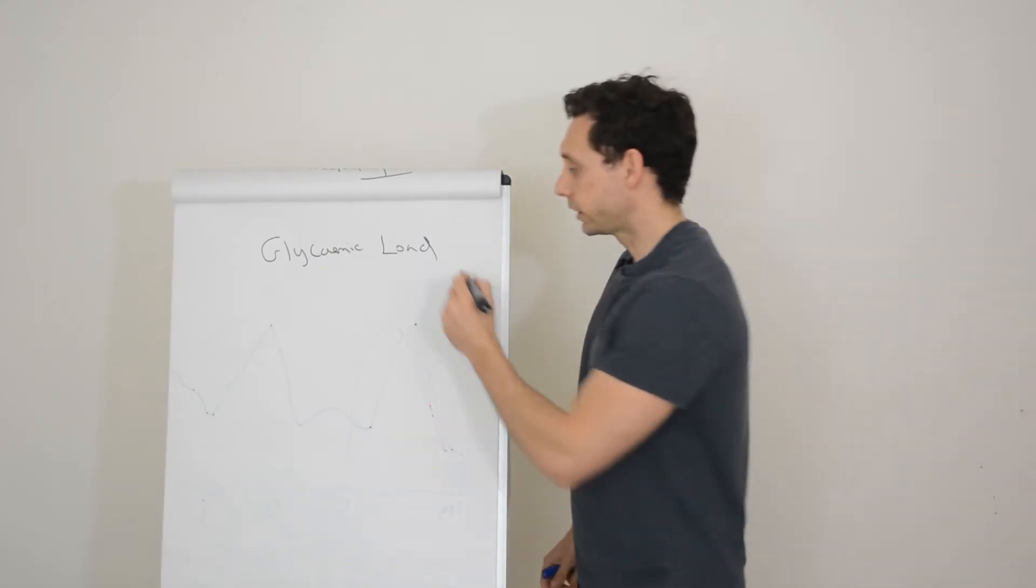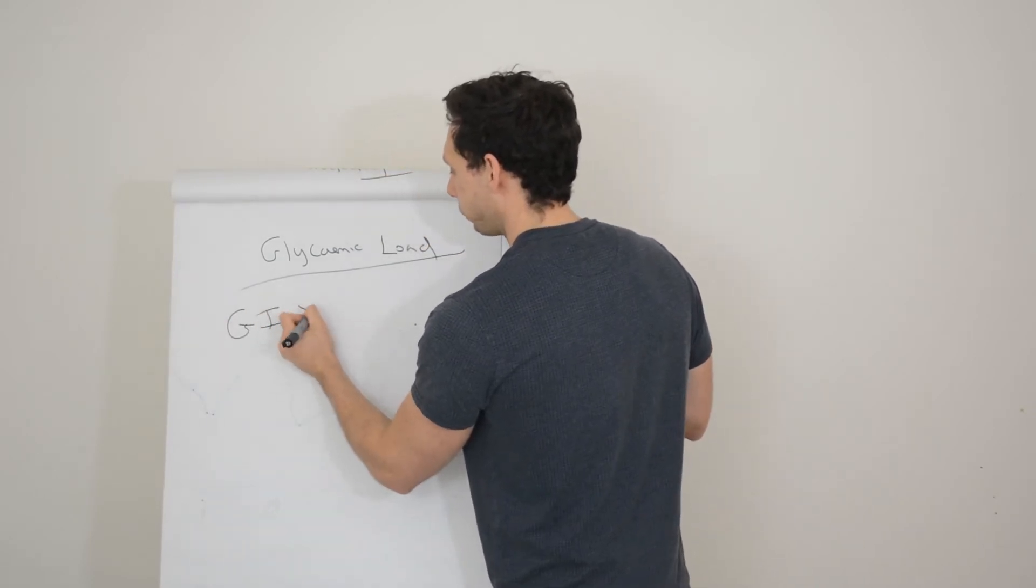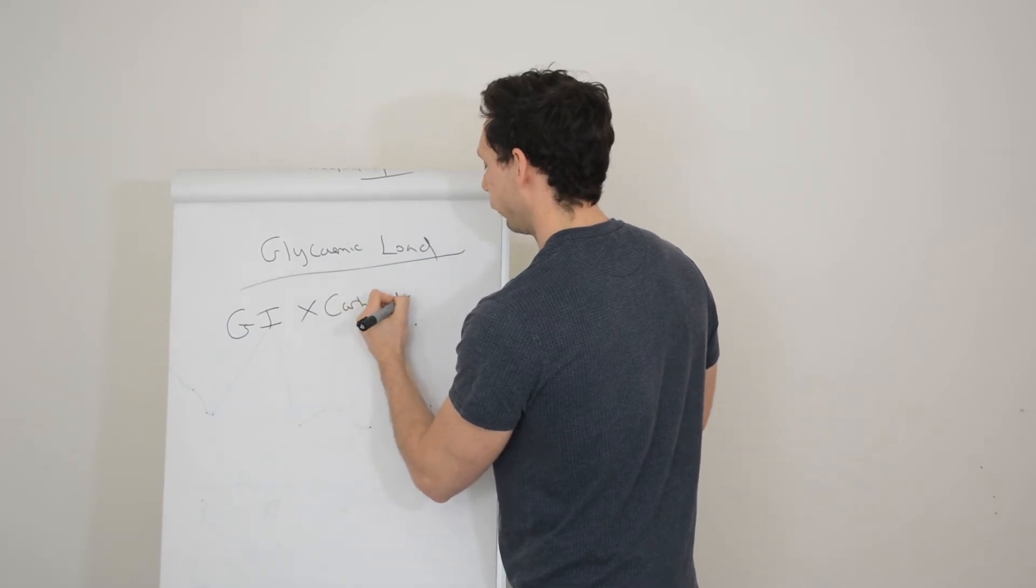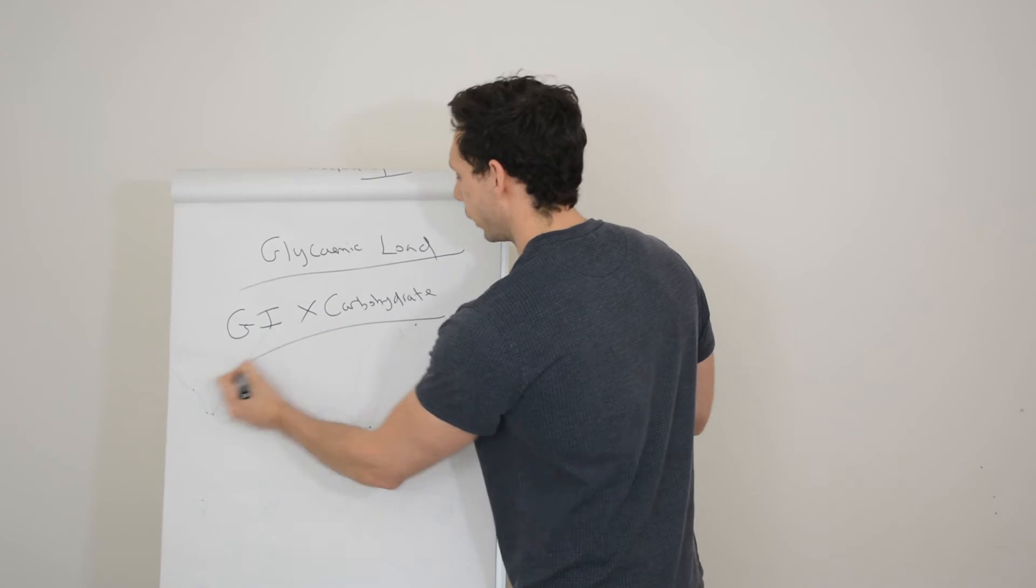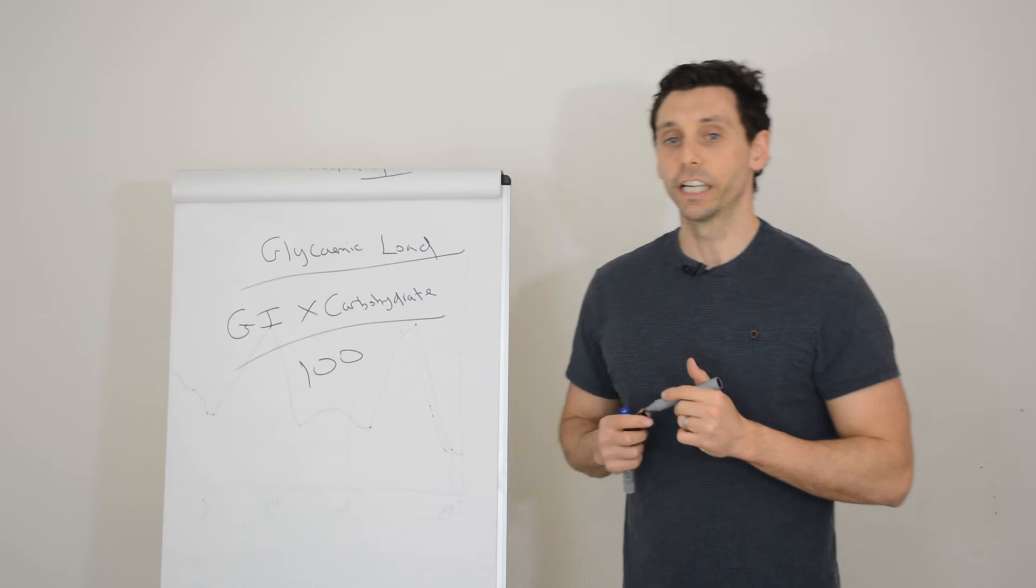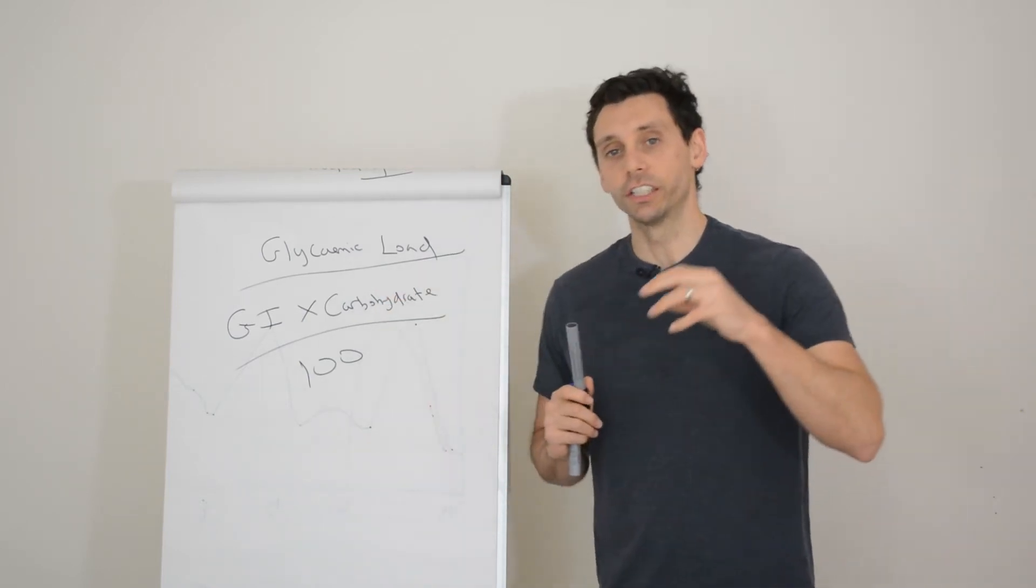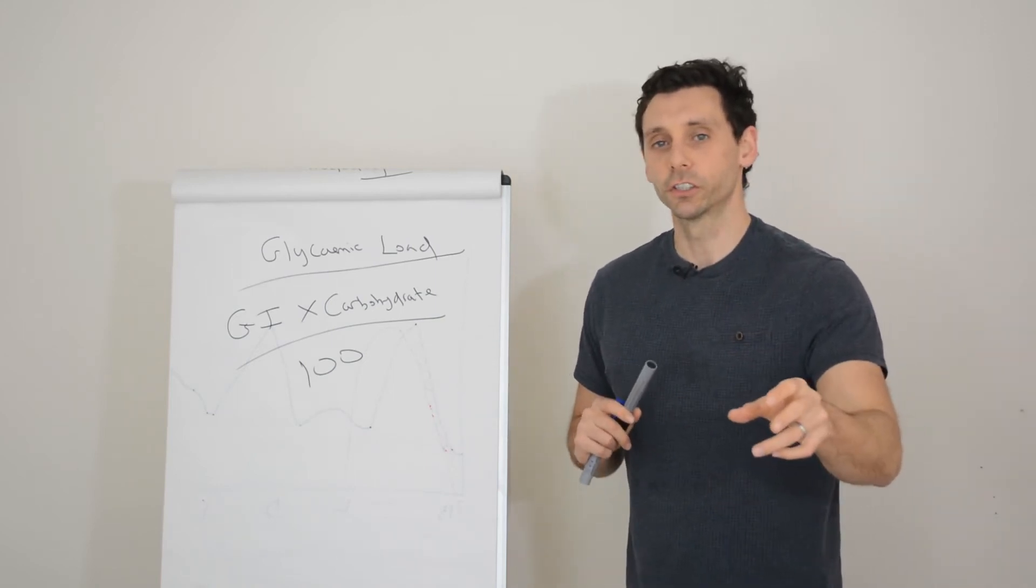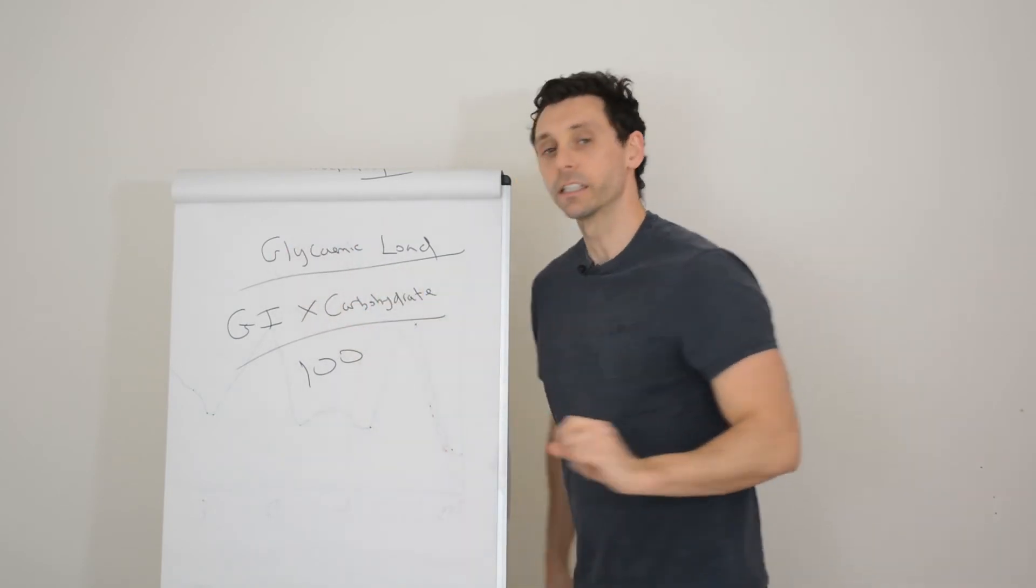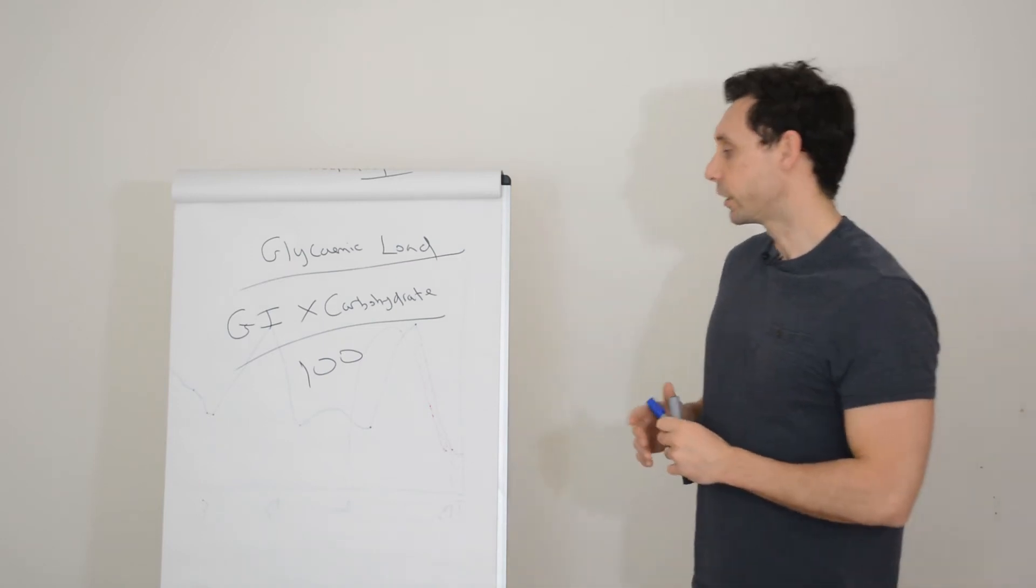And this gives us another measure beyond glycemic index and it's called glycemic load. So glycemic load takes the glycemic index, the GI, multiplies it by the carbohydrate content in the food and divides it by 100. Now you're never going to be doing that on the ground, but what you can do is make informed decisions about your dietary choices in relation to your blood glucose response based on some very simple principles. And actually when we use this measure, glycemic load, rather than the other measure of glycemic index, it starts to look a bit more like you'd expect.